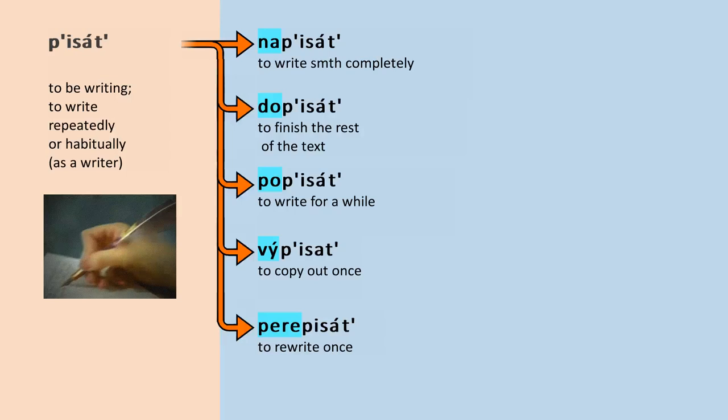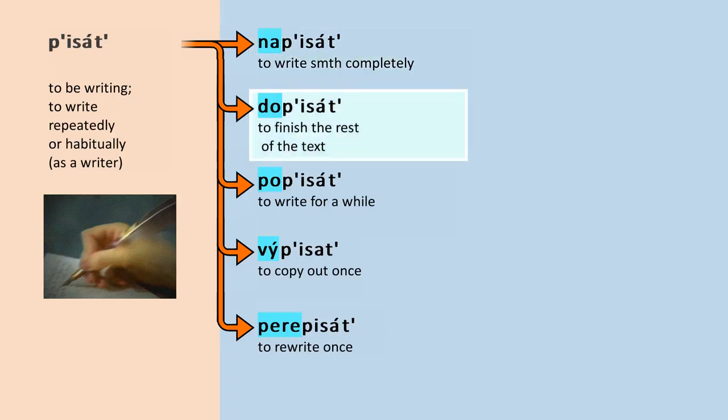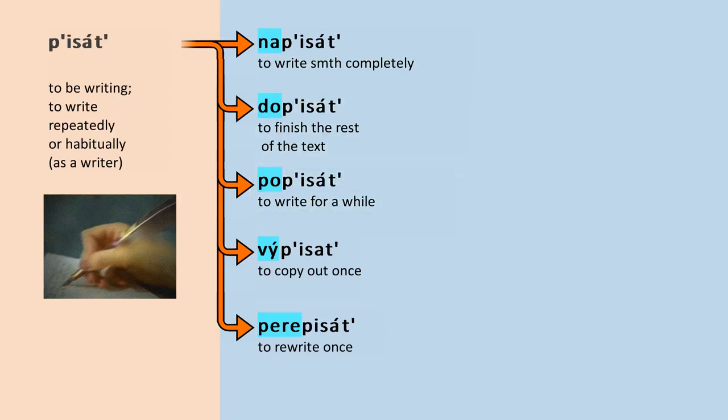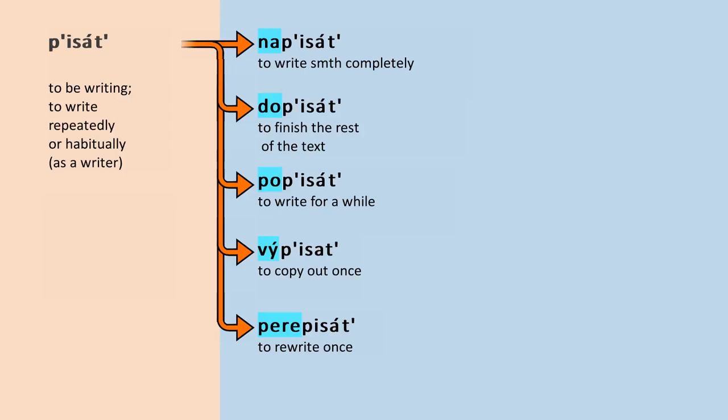The already mentioned perfective 'napisat', literally 'on-to-write', means to write something completely. The perfective 'dopisat', 'up-to-write', means to finish the rest of the text. 'Popisat' means to write for a while. Such variety is inevitable, since the perfective aspect itself only embodies the general principle of transition to a resultant state, which lacks specific logic. This logic is provided by the prefixes, which bring additional semantics.